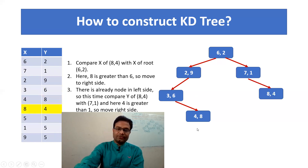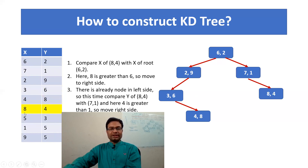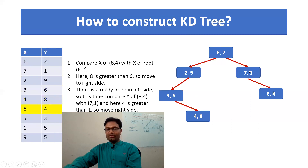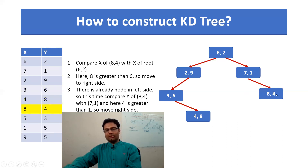Next is (8, 4). Again start comparing 8 with the root 6: 8 is greater than 6, so it goes to the right side. But the right side already has the element (7, 1). Then compare the y value. Y of (8, 4) is 4, and y of (7, 1) is 1. 4 is greater than 1. So (8, 4) should go to the right side of the (7, 1) node. You can see (8, 4) is on the right side of the (7, 1) node.